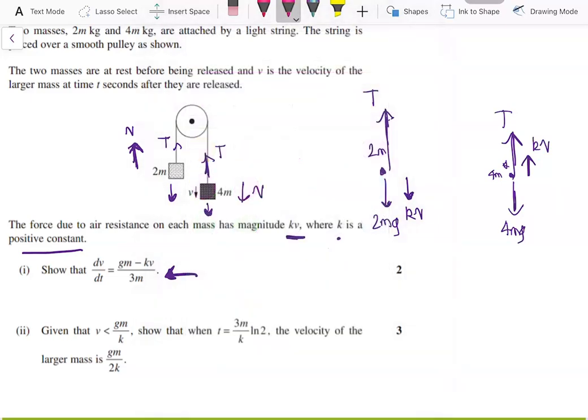The net force on the 2m mass will be equal to ma by Newton's second law. So it will be ma upwards as a net force. Or it should be 2ma in fact, because the mass is 2m. So 2ma equals the net force which is T minus 2mg minus kv.